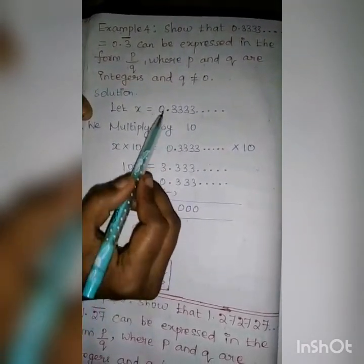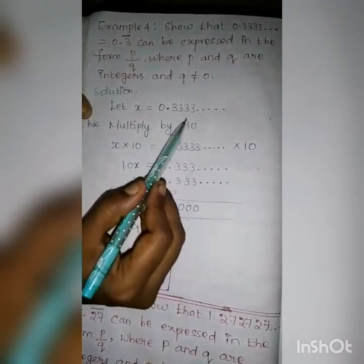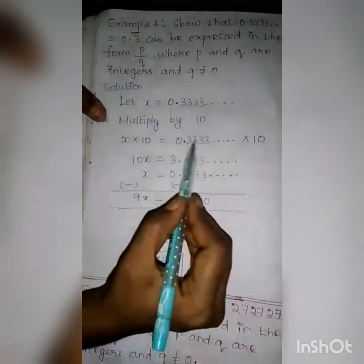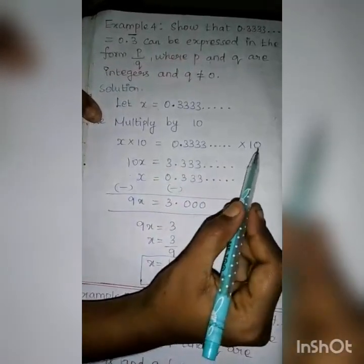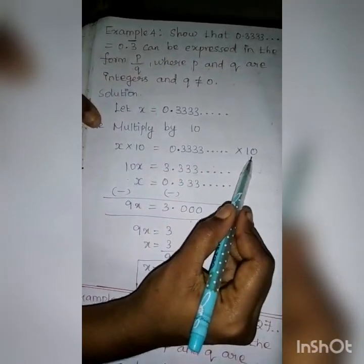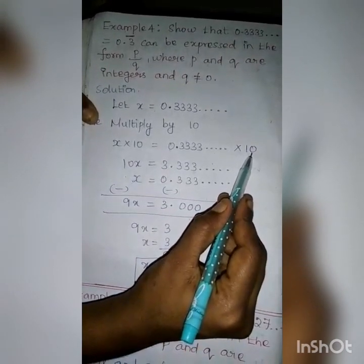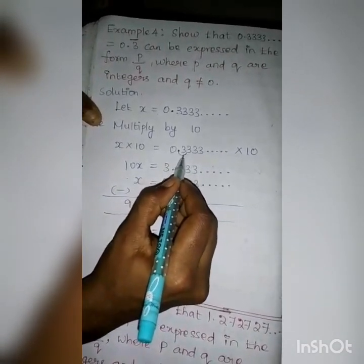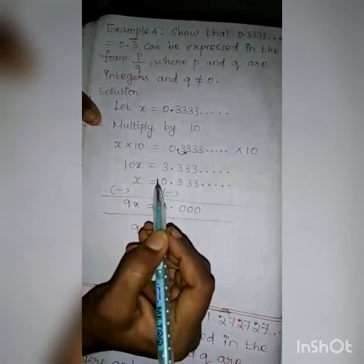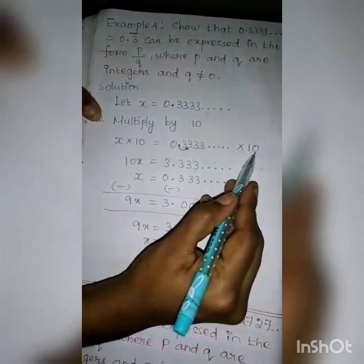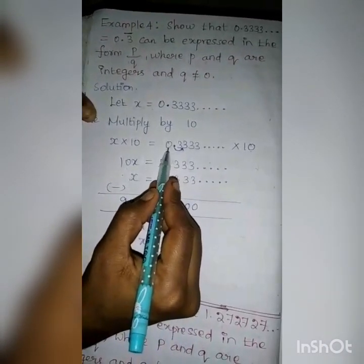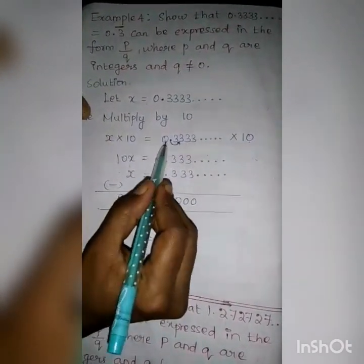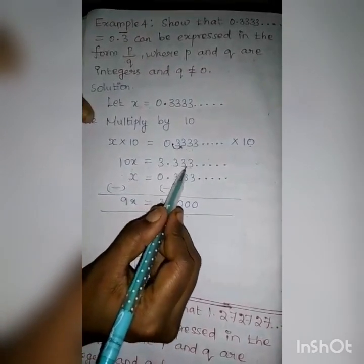So, X into 10 equals 0.3333 etc. into 10. X into 10 is 10X. Then, 0.3333 etc. into 10 — we have to multiply the decimal by 10. There is only one zero, so the point moves from left to right by one place. Therefore, 10X is equal to 3.3333 etc.